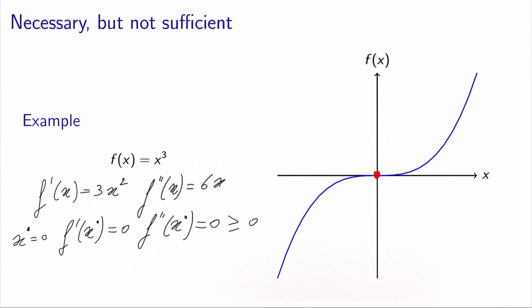So this is an example that shows that the condition is necessary, so it means that if it is not verified, we are sure that we are not at a local optimum, but it's not sufficient.